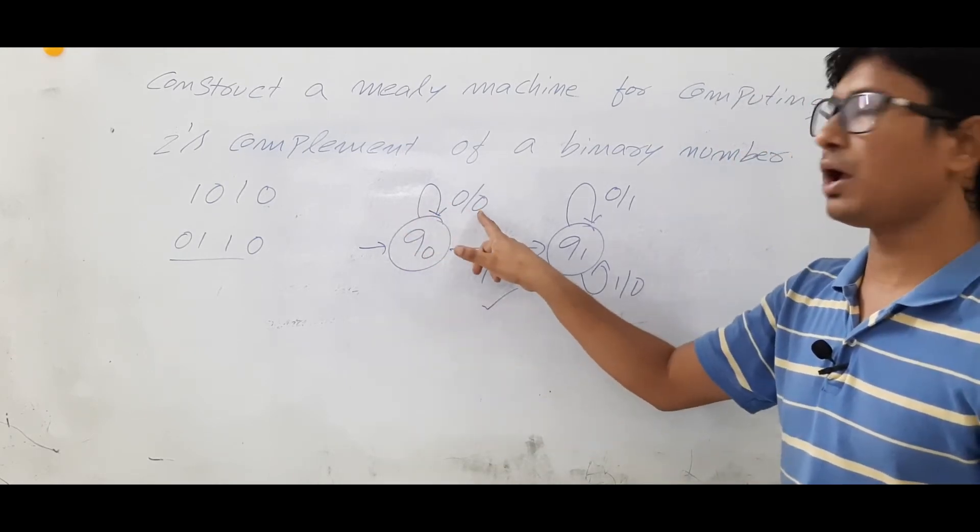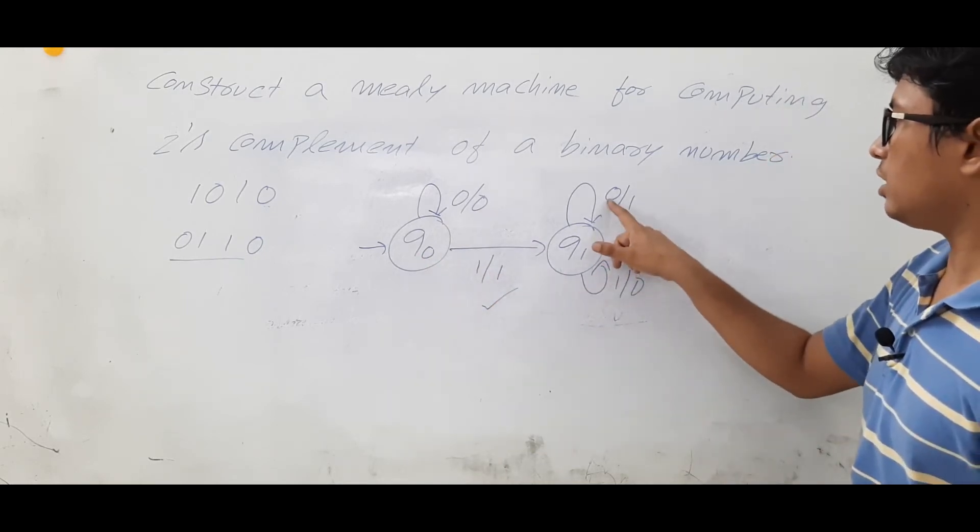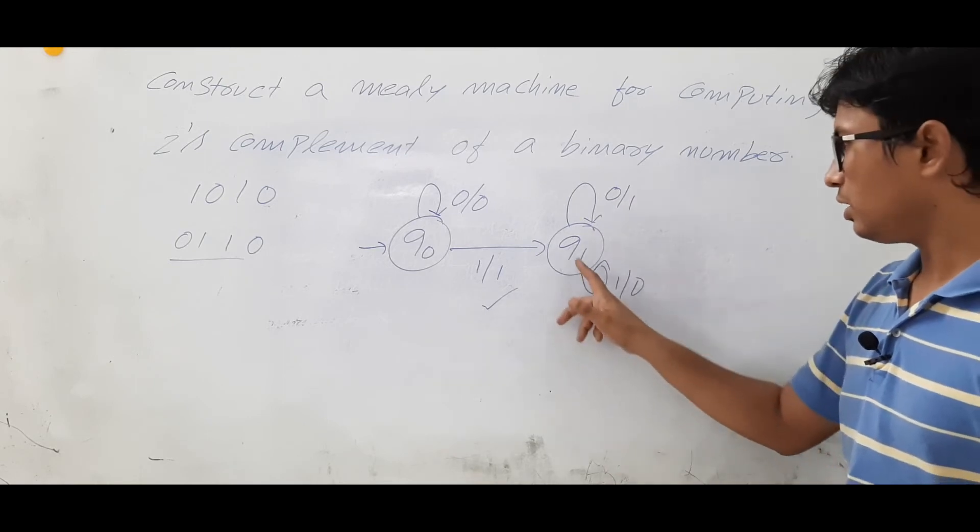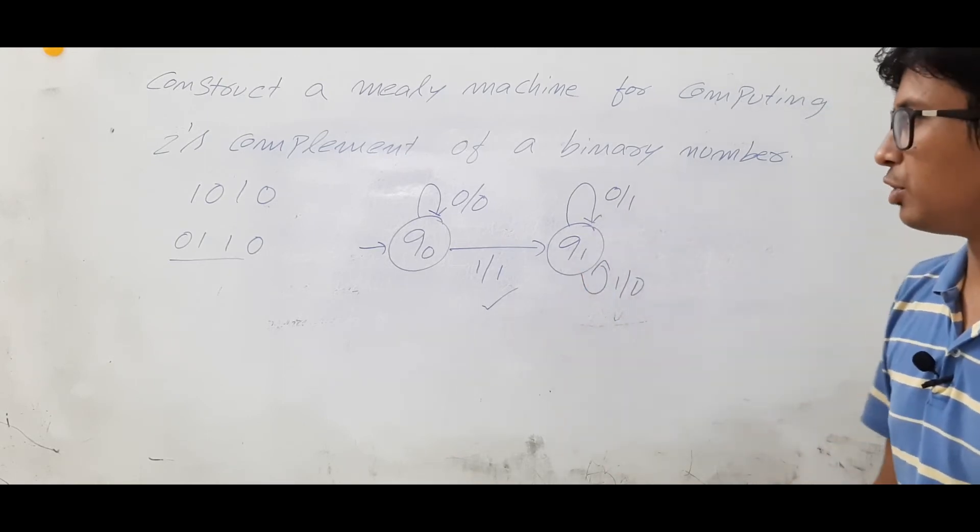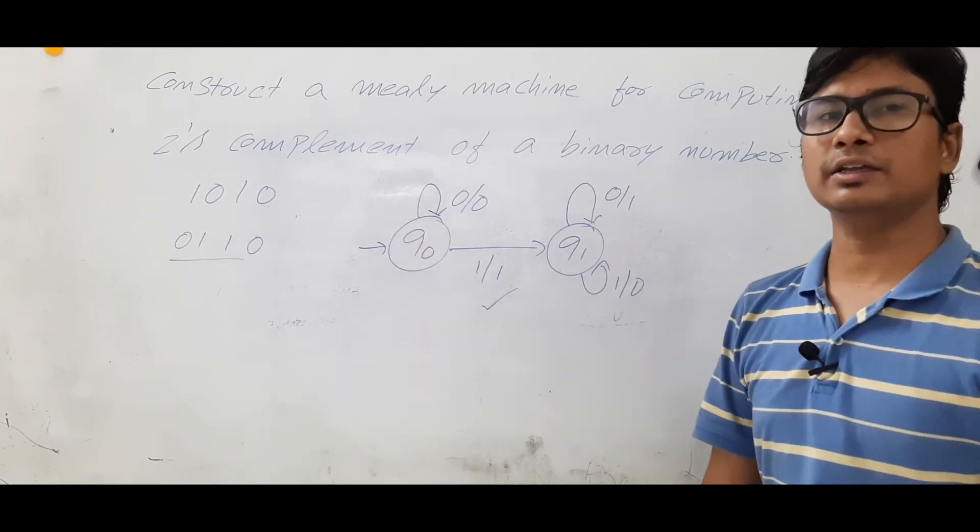q0 on 0, you have output as 0. q0 on 1, you are getting an output as 1. q1 on 0 is generating some output. q1 on 1 is generating some output. So it is a Mealy machine for calculating the 2's complement.